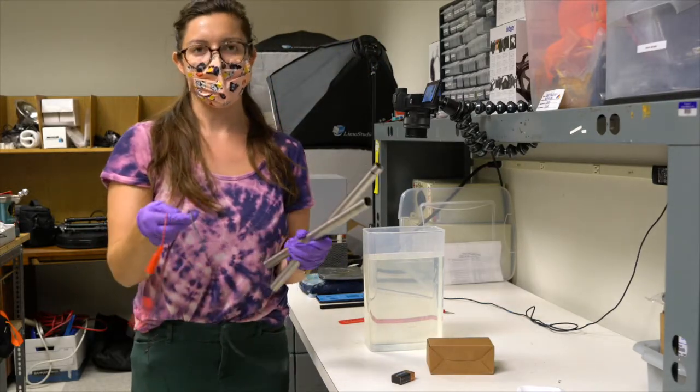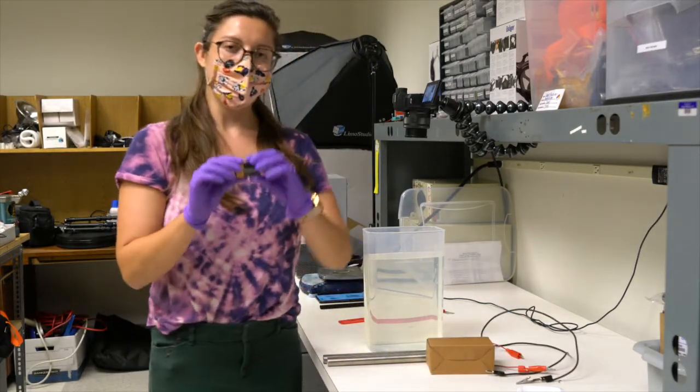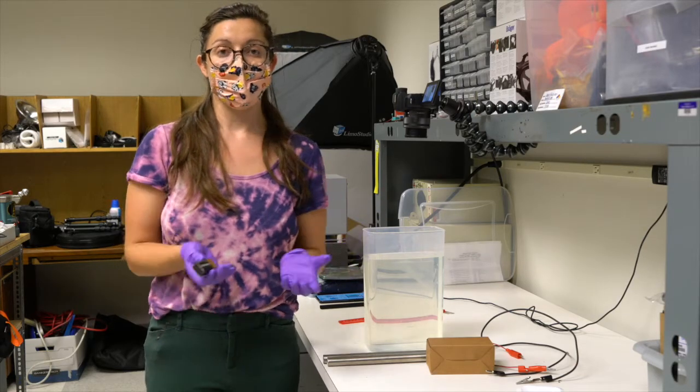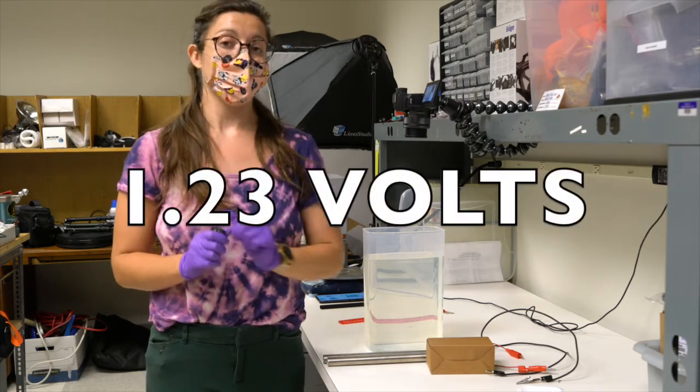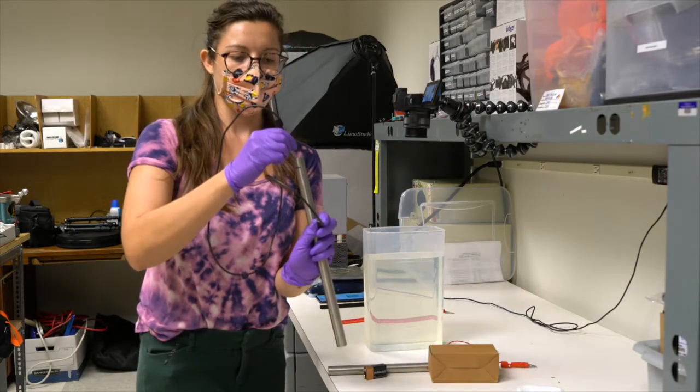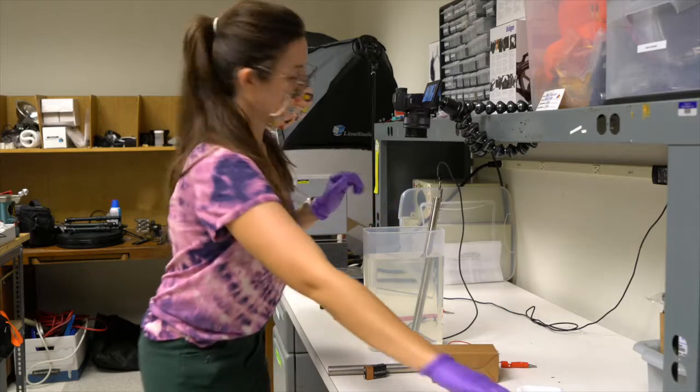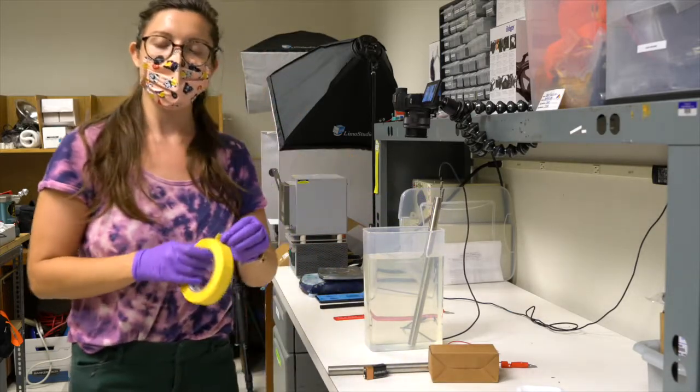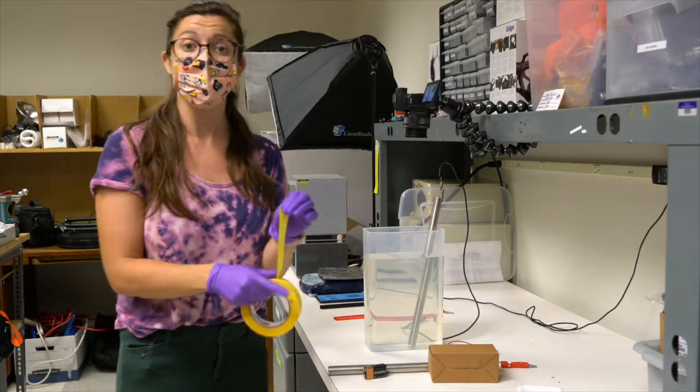So red is positive and black is negative. This is a nine volt battery, but the voltage it takes to split water is actually 1.23 volts. I'm going to take one of my electrodes and hook up the wire for the negative. I'm going to put it in the water, and just to be safe I'm going to tape it back so that the two electrodes don't hit when they're in the water.